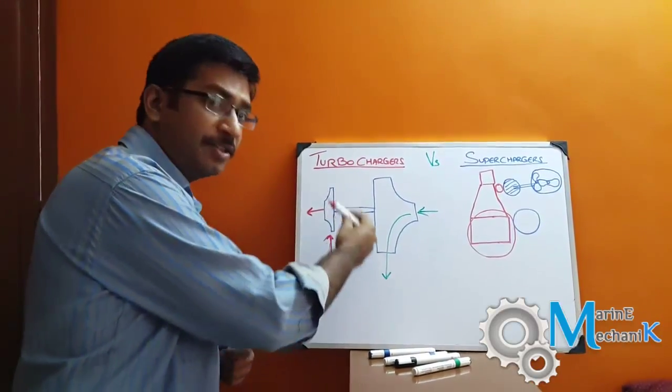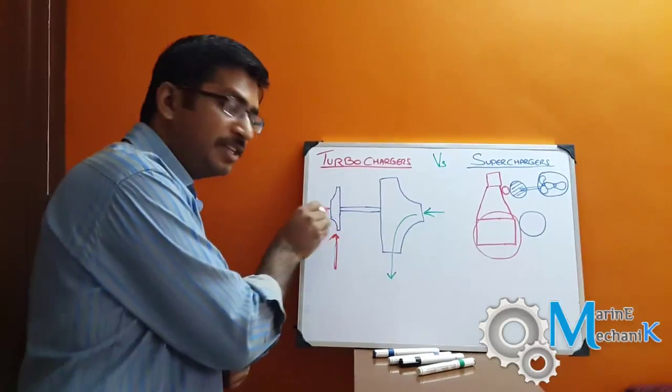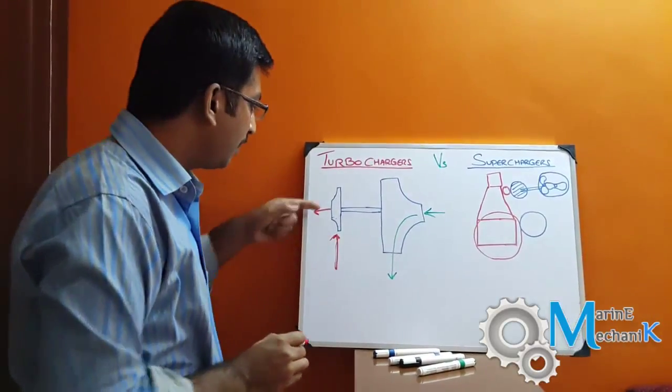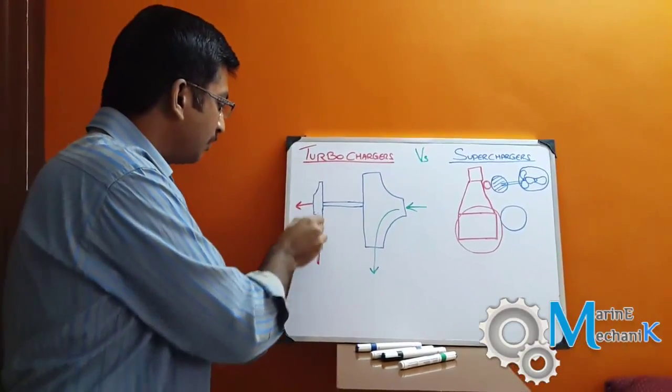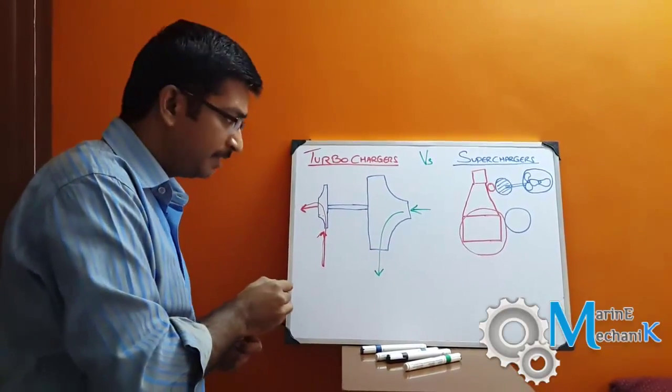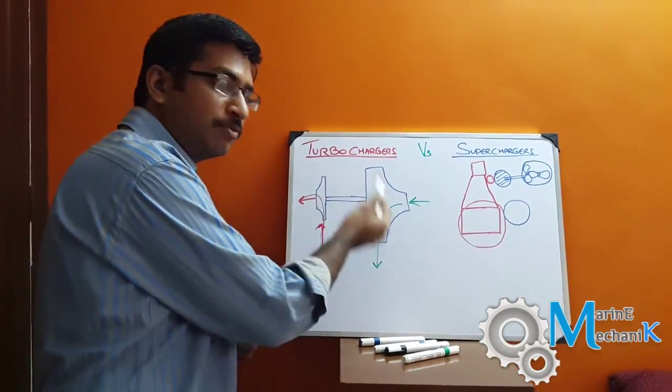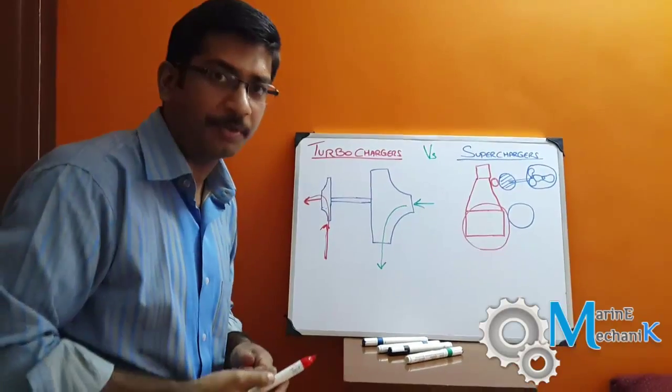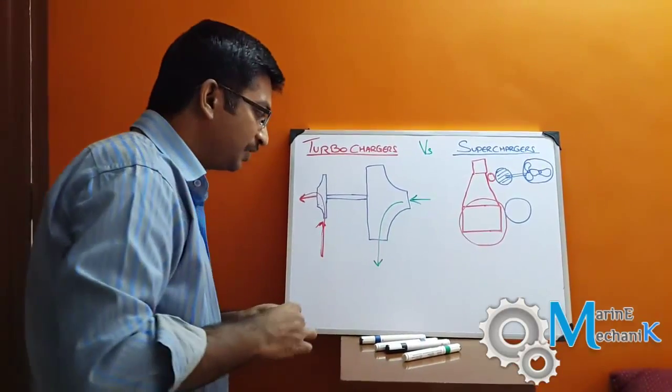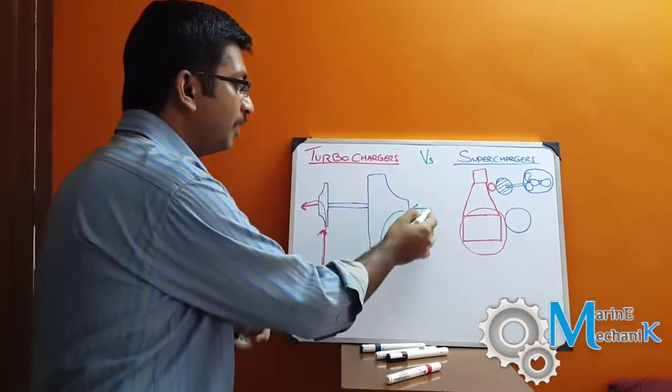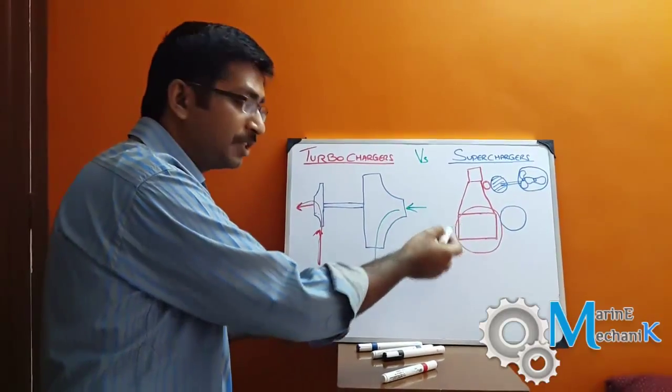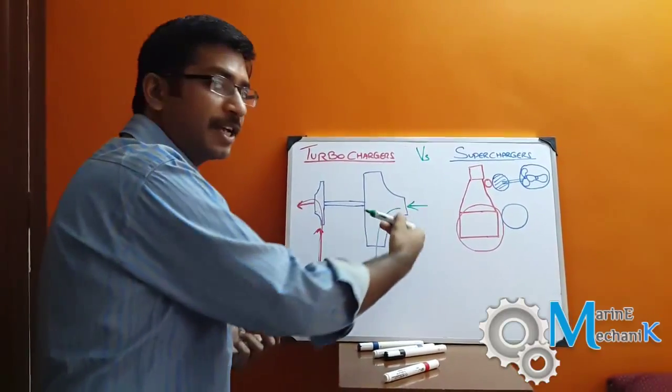When we look at the turbocharger, it has the exhaust gas entry driving a turbine, which I have indicated over here. The turbine drives and the exhaust gas goes out through this passage. On the same shaft mounted is a centrifugal compressor where the first charged air enters here with the help of silencers, filters, and inducers. It comes in and then the air gets compressed, thus fed into the engine.